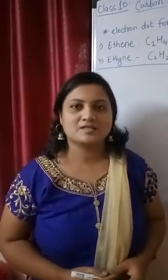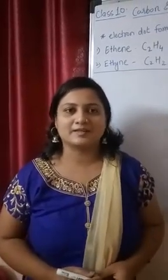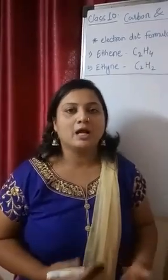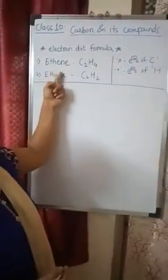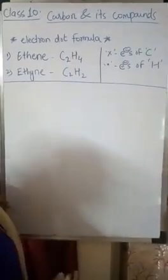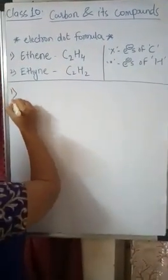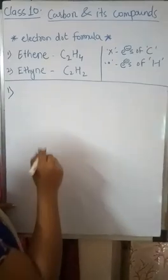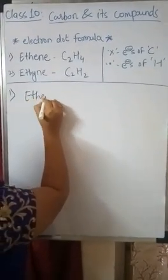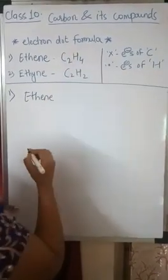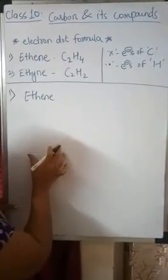Welcome students to the basic chemistry session. In this video we will see how to draw the electron dot structure of ethene and ethyne — one alkene and one alkyne. We will start with ethene first. The formula for ethene is C2H4, so we will draw the electron dot structure of ethene with formula C2H4.